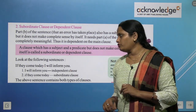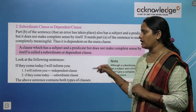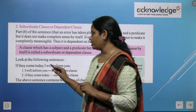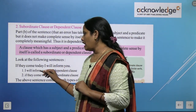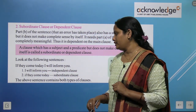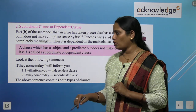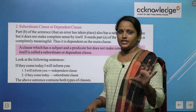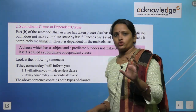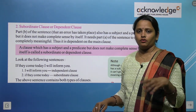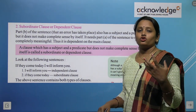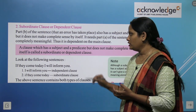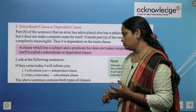Look at the following sentence: 'If they come today, I will inform you.' Here 'I will inform you' is the independent clause — it gives complete sense on its own. But 'if they come today' feels incomplete on its own, as if something is missing. So 'if they come today' is the subordinate or dependent clause.